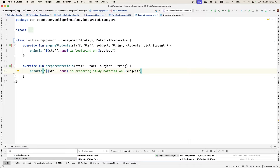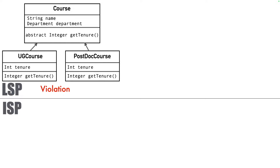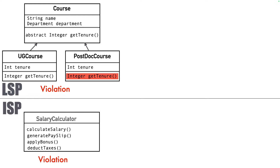Those who watched the previous video on Liskov substitution principle might feel that both LSP and ISP look quite similar, but there is a difference. In the Liskov substitution principle, you had a Course with a function getTenure, and the PostdocCourse had to implement getTenure even though it didn't need it. In the case of interface segregation principle, you had a very large interface with many functionalities defined, so any class needing even one calculateSalary function had to implement all other functionalities even though it didn't need them — that is an ISP violation.